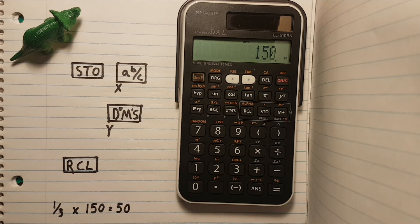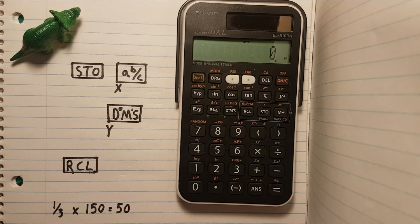All right, now let's say we run some other calculations and come back to our original and we want to find out what one-third of 150 is, or X times Y.